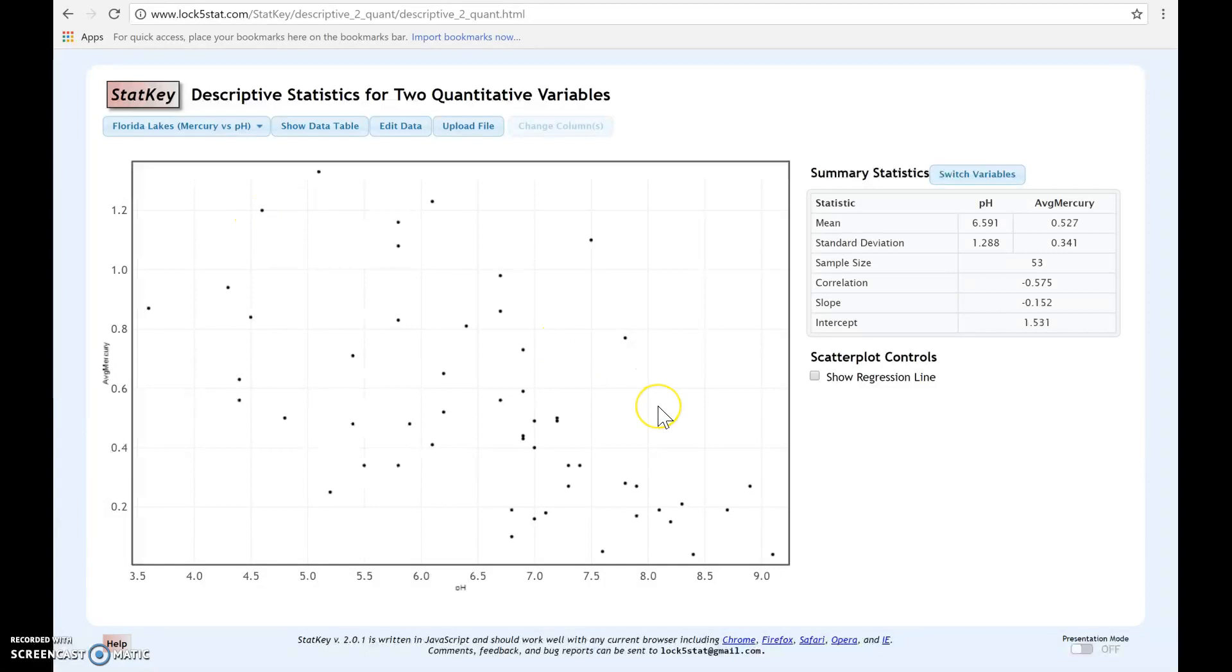Automatically we'll see that StatKey has a scatter plot already on here, so it lets us know we're in the right spot. And just like with the other sections, StatKey does come with some preloaded datasets.